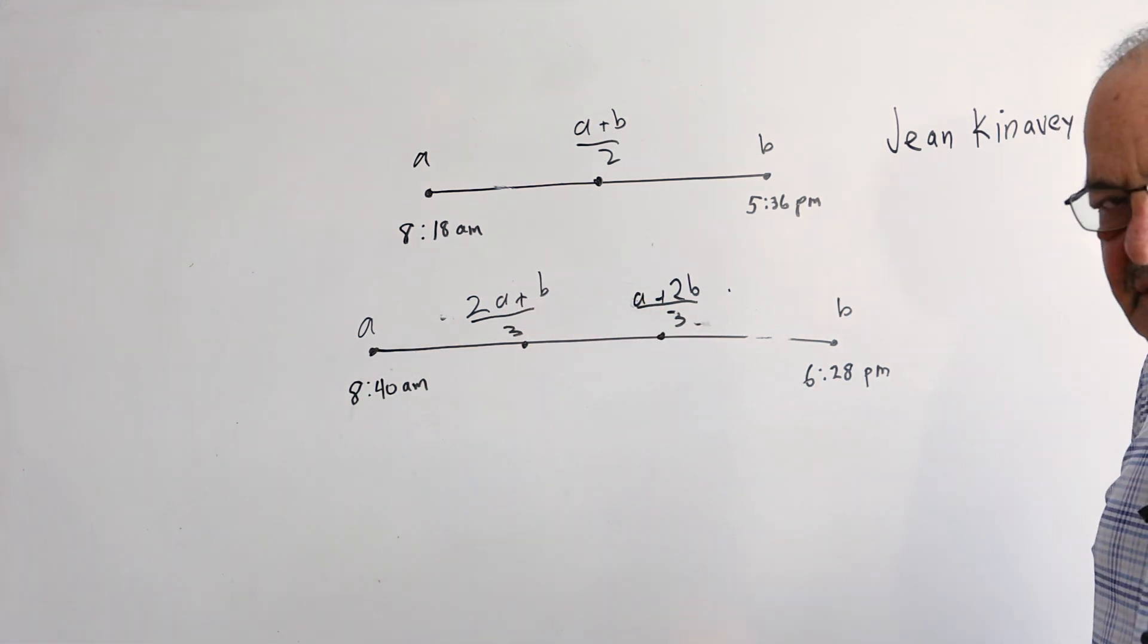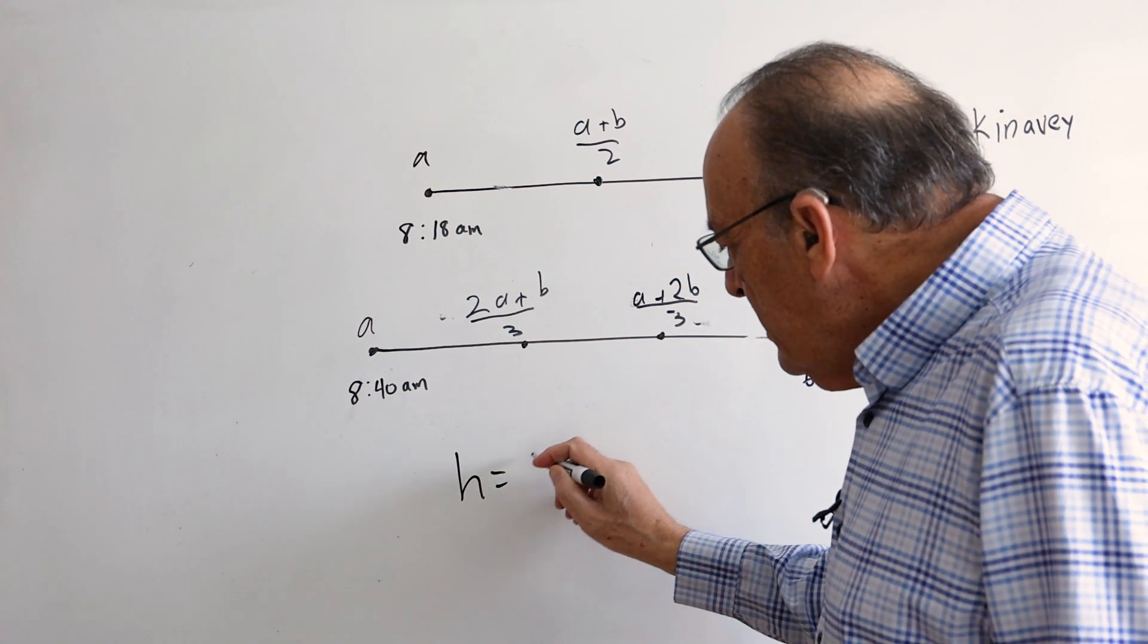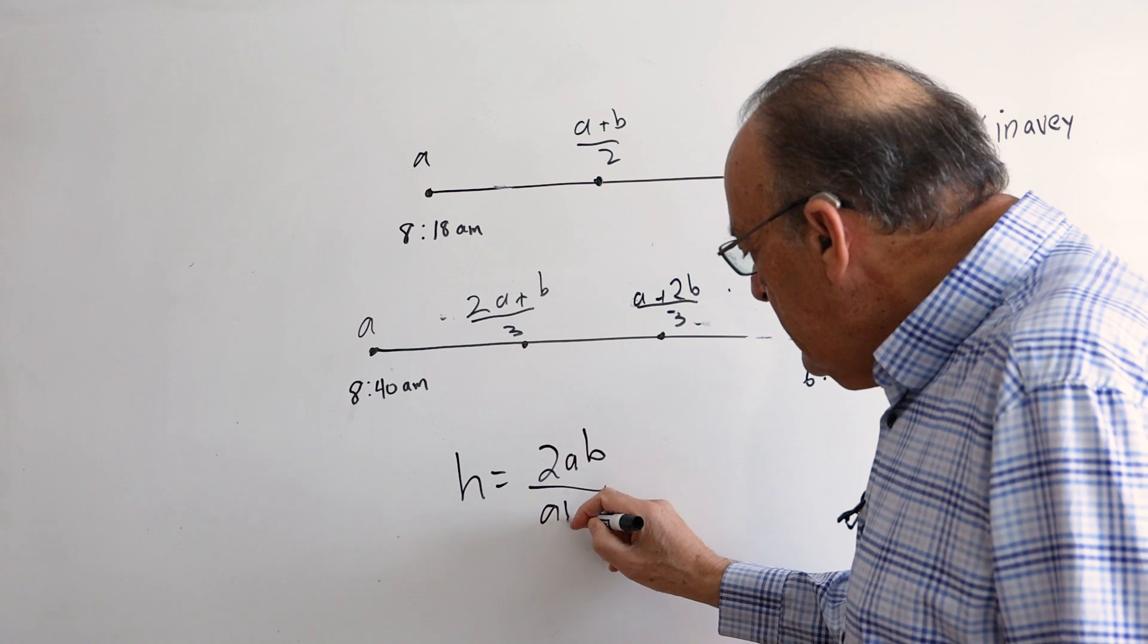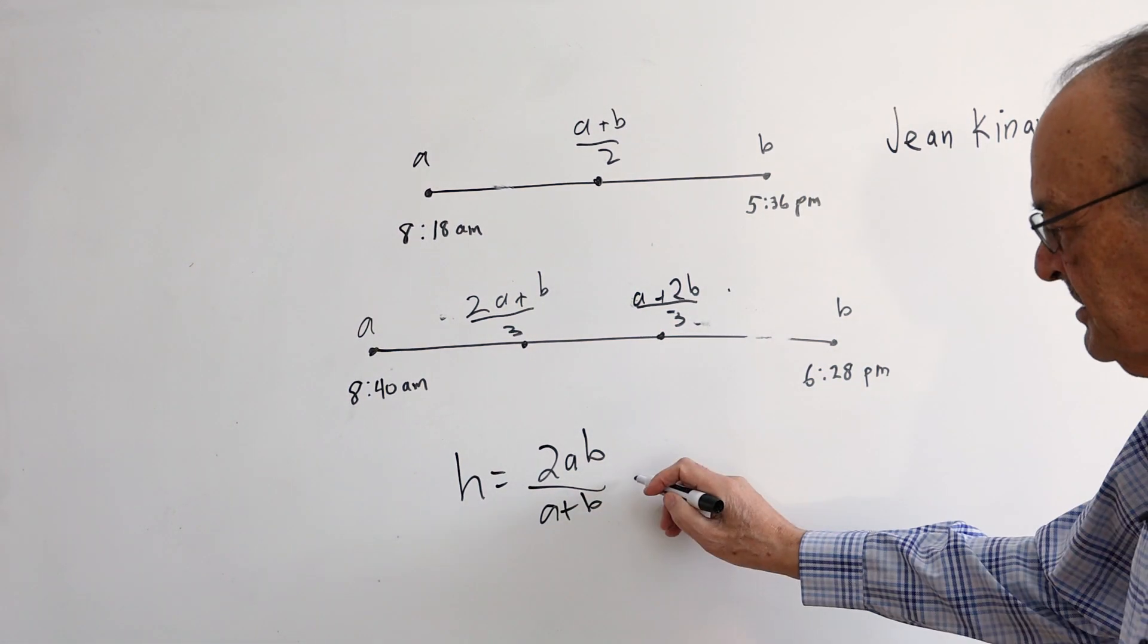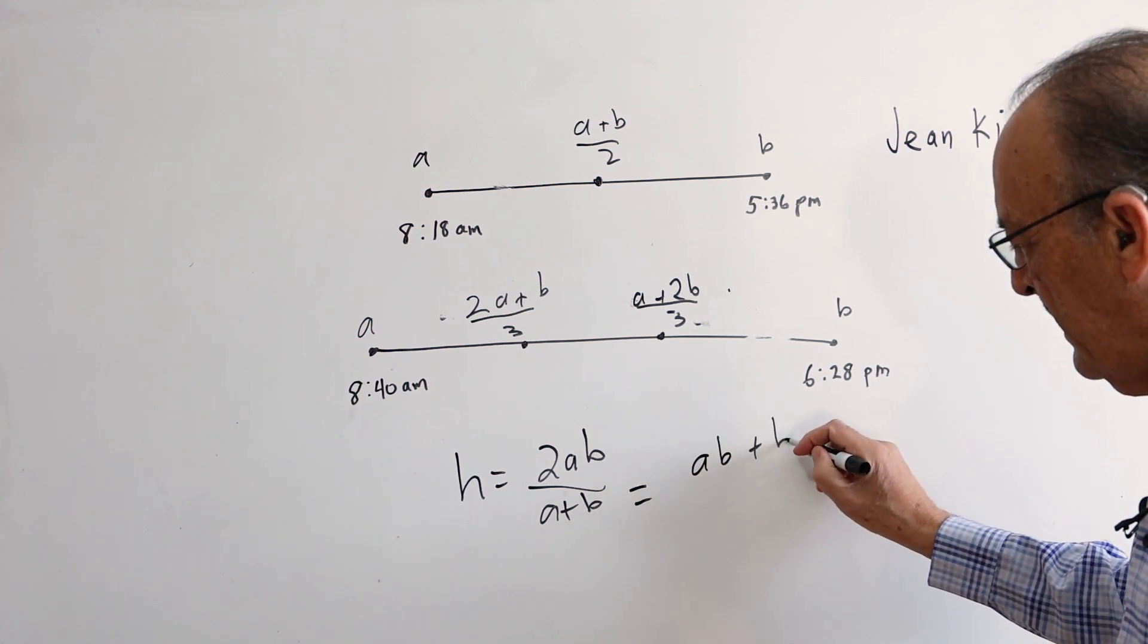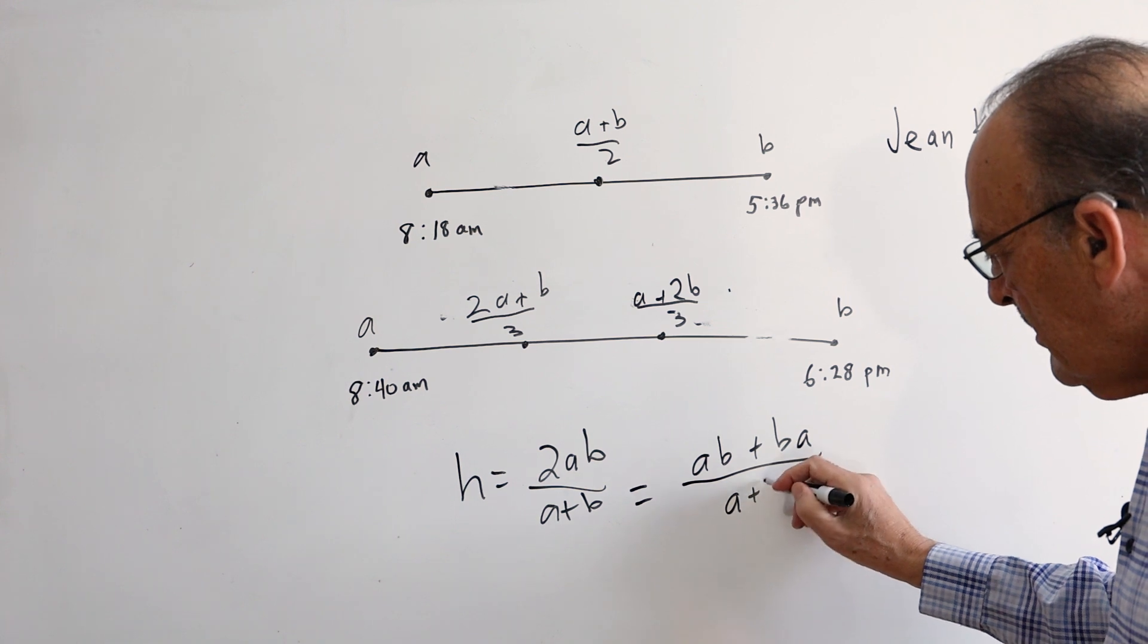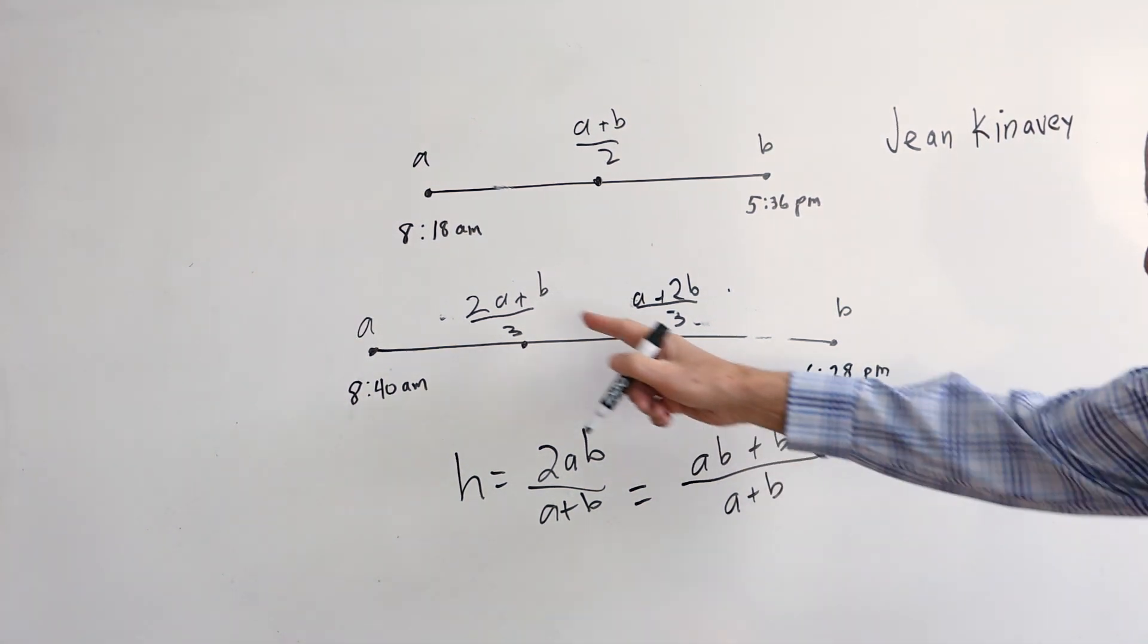Now the question is, what does this have to do with the harmonic mean? Well, the formula for harmonic mean is 2ab over a plus b. And if you look at this carefully, it looks like it's ab plus ba divided by a plus b, which is actually similar to this. It's a weighted average.